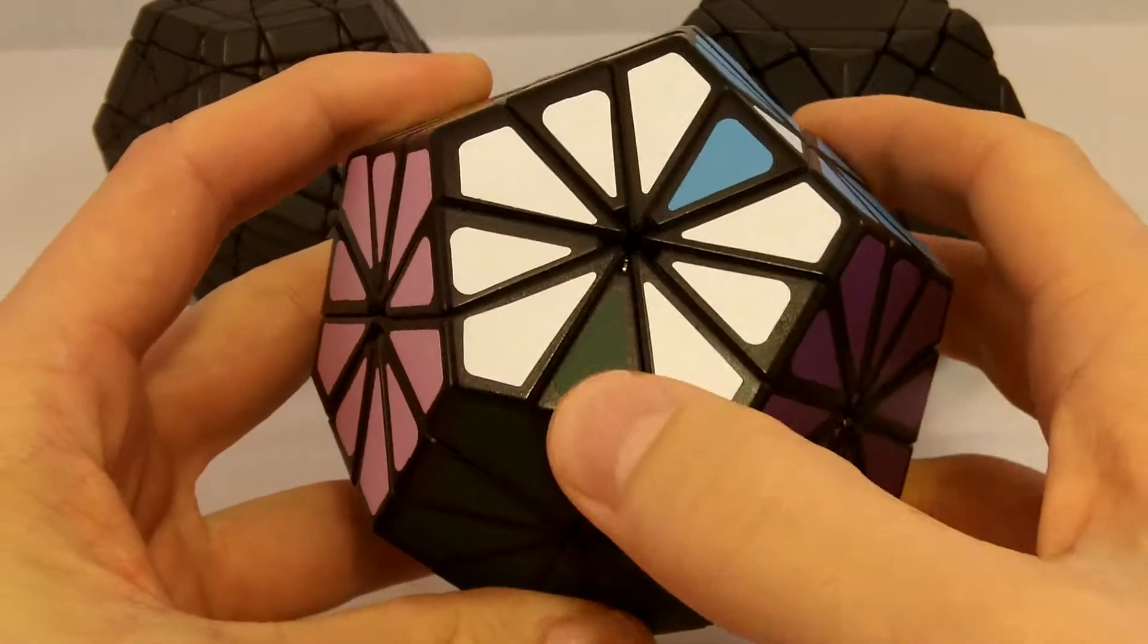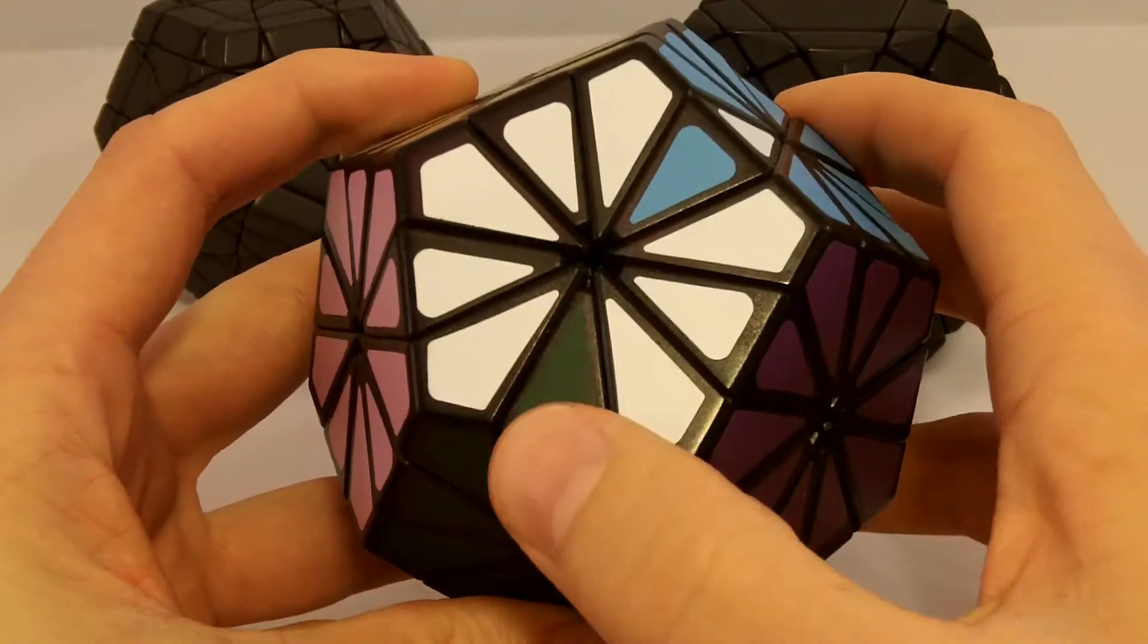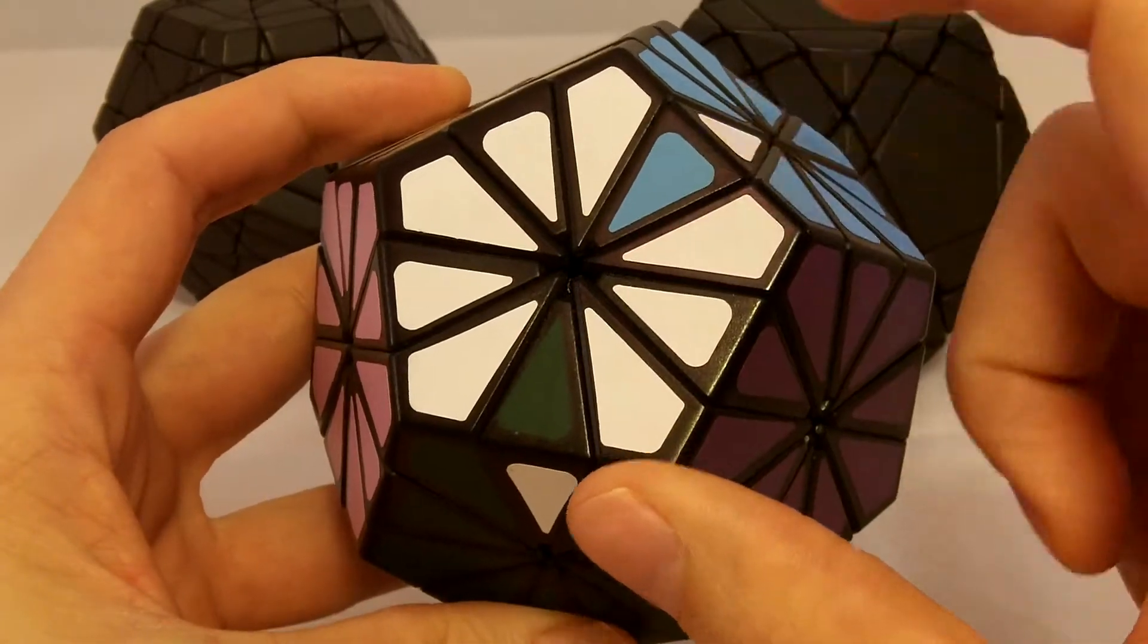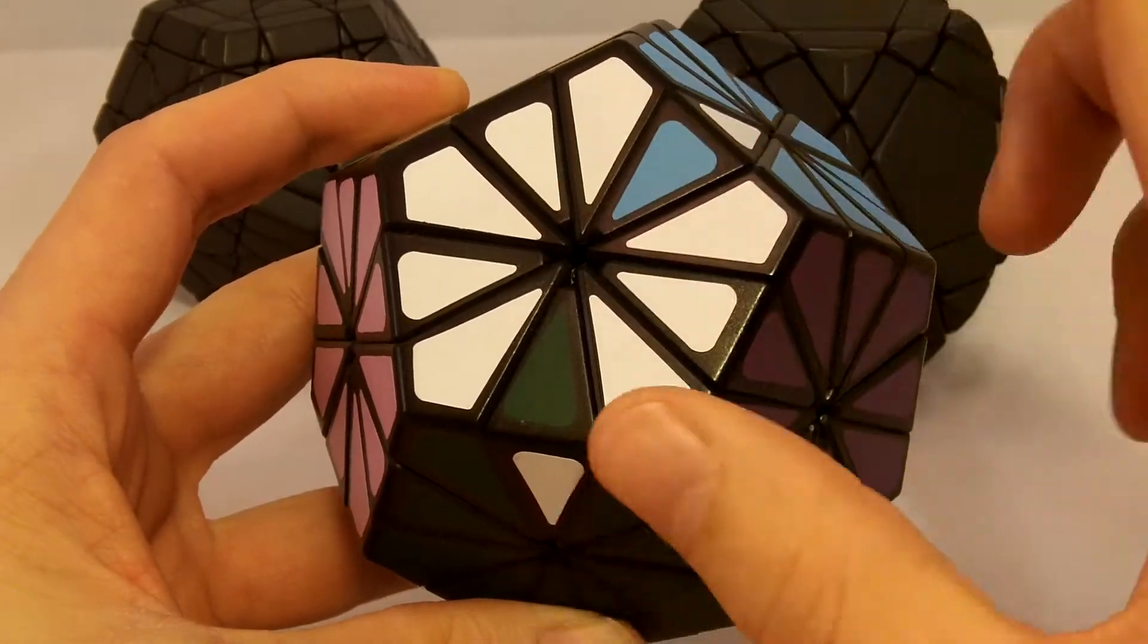So I'm going to take this piece, this green white edge, and I'm going to flip it in place in such a way that I can then replace that piece with this piece and undo the whole process.